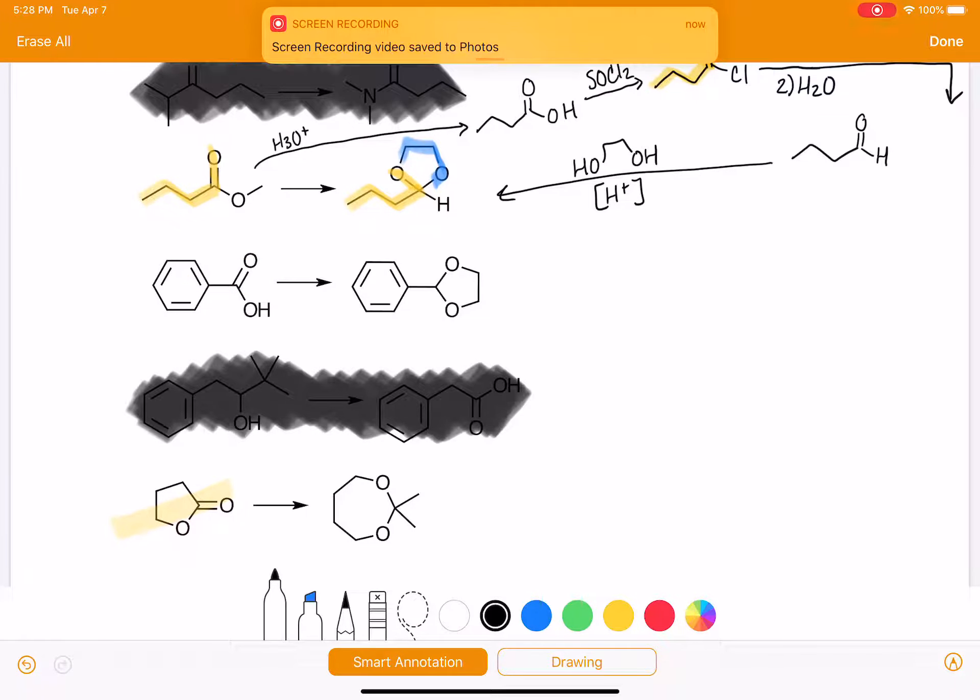Next one, this one is already a carboxylic acid so we don't have to turn it into a carboxylic acid. We're just going to go straight to the acid chloride. Once we get to the acid chloride,